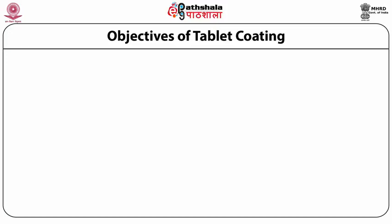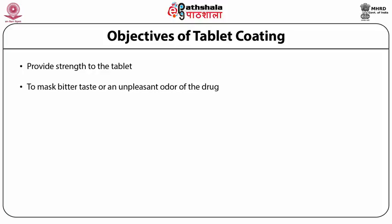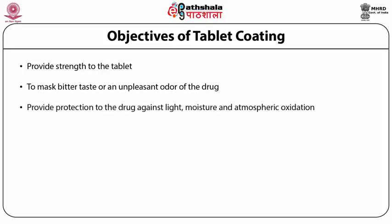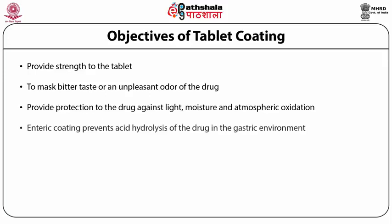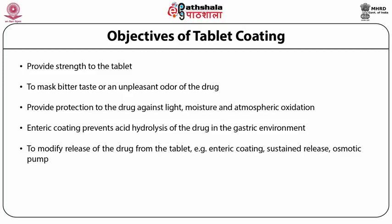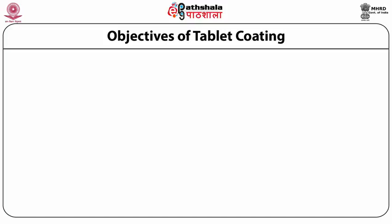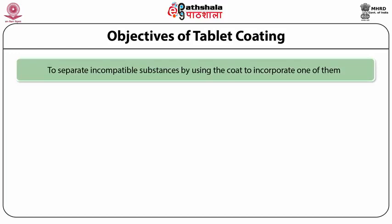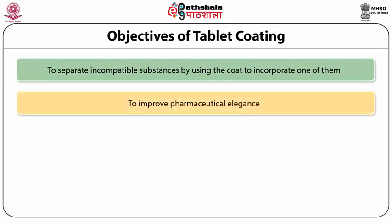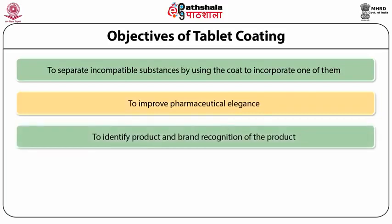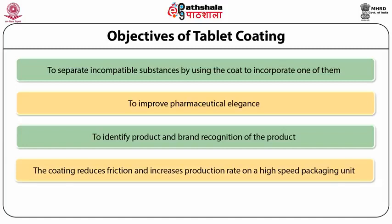Objectives of tablet coating. Coating provides strength to the tablet. Coating masks bitter taste or an unpleasant odor of the drug. It also provides protection to the drug against light, moisture, and atmospheric oxidation. Coatings have special functions like enteric coating, which prevents acid hydrolysis of the drug in the gastric environment. Coatings modify release of the drug — for example, enteric coating, sustained release coating, and osmotic pump devices. Coatings are also used to separate incompatible substances. Coating improves elegance, identifies the product, and gives brand recognition. Coating also reduces friction and increases production rate on a high-speed packaging unit.